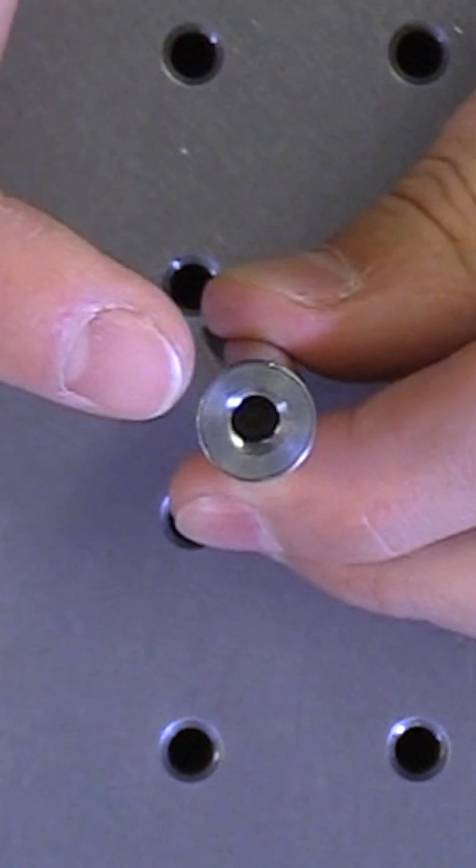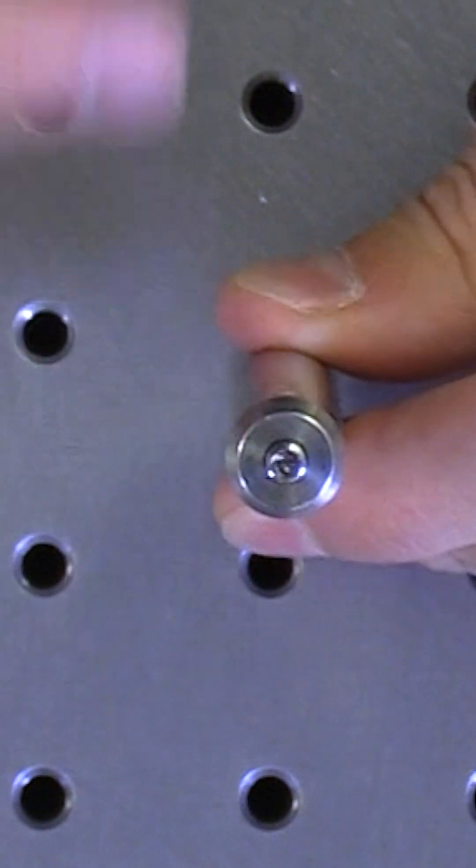On one side, we have a relatively large tapped hole, and on the opposite side, we have a relatively small tapped hole.